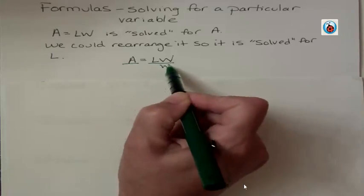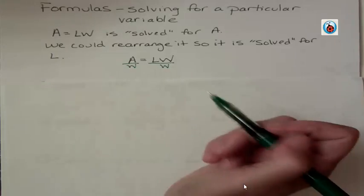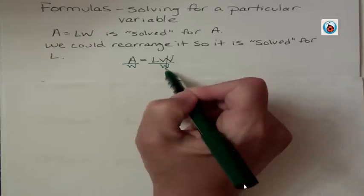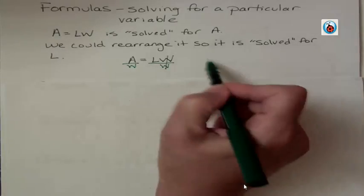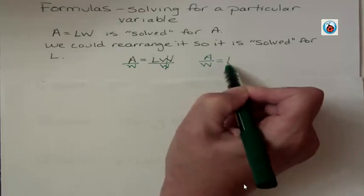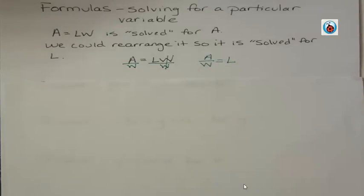You do the opposite operation, not the opposite sign. And then you say, well, I have two Ws over here that cancel, and I have A over W, and I'm just going to leave that. So A over W equals L. Now that formula is solved for L.